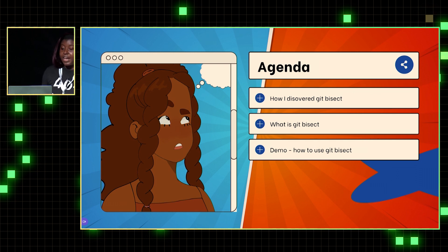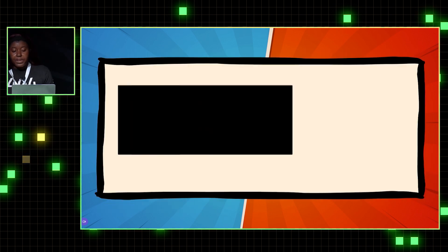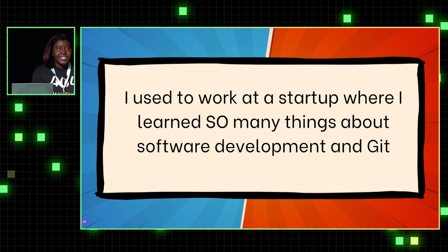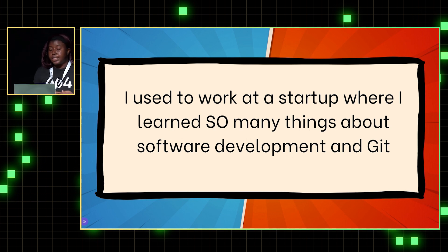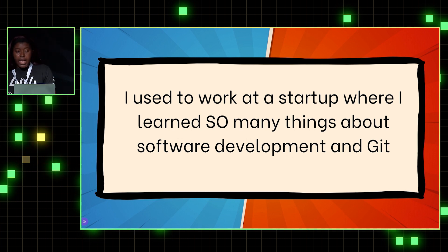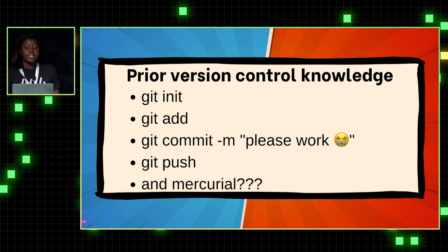So I only have a little bit of time here, so this is the agenda: we're going to talk about how I discovered Git Bisect, what it is, and how to use it, and then I'll wrap up. I discovered it while working at a startup. I learned so many things there that a junior engineer probably wouldn't normally get experience with — like DynamoDB, CloudWatch, CloudFormation, and Twilio. I learned a lot about Git, and prior to that startup I was kind of scared of Git and GitHub. I attended a coding bootcamp and was very confused by all of it.